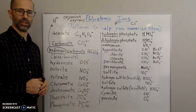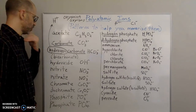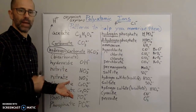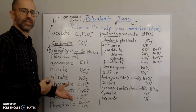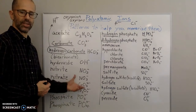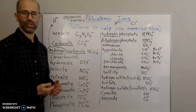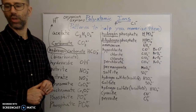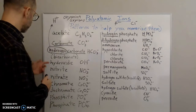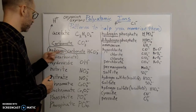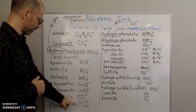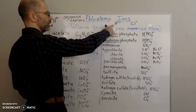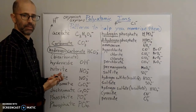At the end of the last video, I was pointing out some patterns with regard to charges. If you know the charge on the monatomic ion that the oxyanions are based on, you can figure out the charge for a lot of the polyatomic ions — not all of them, but a lot. For example, take phosphate: if you remember what the charge on the phosphide ion is from the periodic table, that helps you remember phosphate's charge.